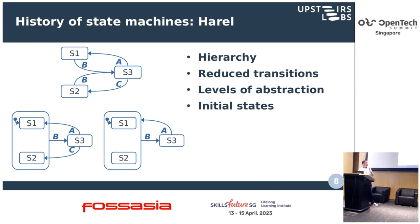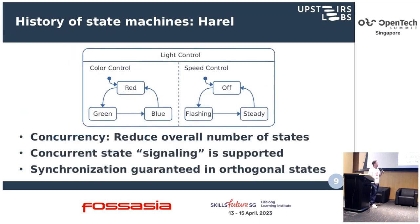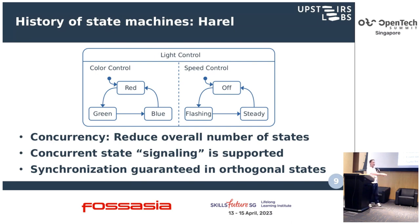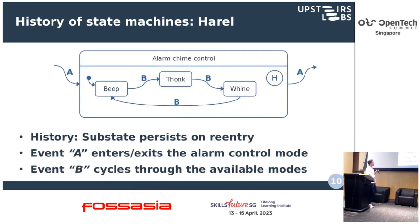He introduced orthogonality. In this case you have a light control — the color of the light, whether the light is flashing, whether it's constant — and you would need nine different states if you didn't have orthogonality to represent the same number of machine states. He also added history.